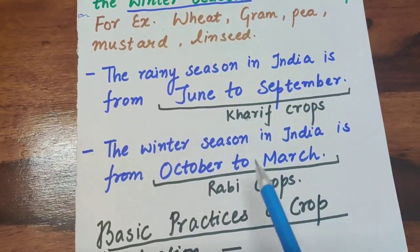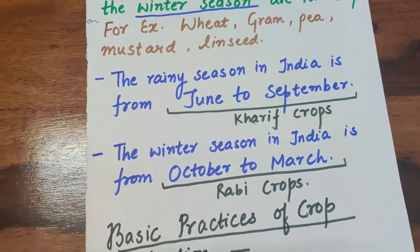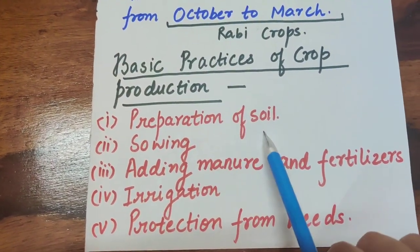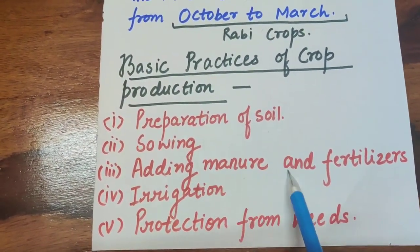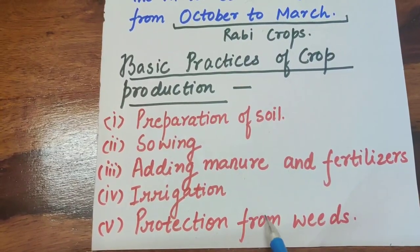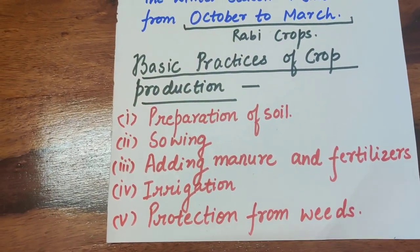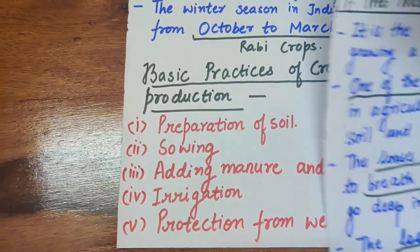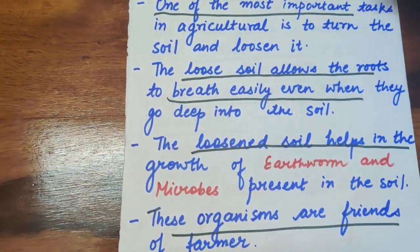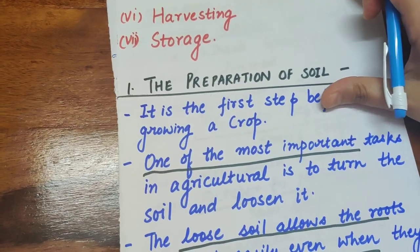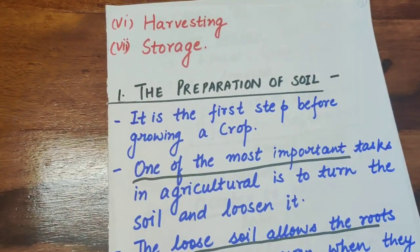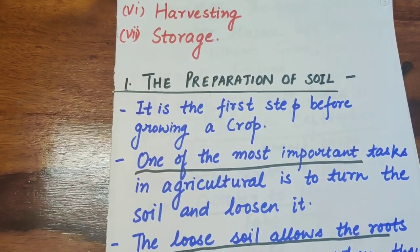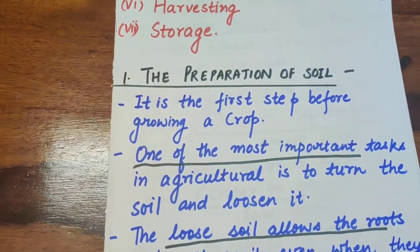The basic practices of crop production are: preparation of soil, sowing, adding manure and fertilizers, irrigation, protection from weeds — these are five steps. There are two more: harvesting and storage. We are going to discuss all these things in detail.